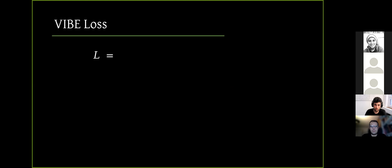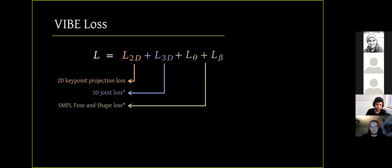Overall, the loss is composed of a 2D key point projection loss, 3D joint loss, SMPL pose and shape losses, and the motion discriminator loss. Note that we only use 3D losses when the 3D annotations, SMPL or 3D joint annotations, are available.